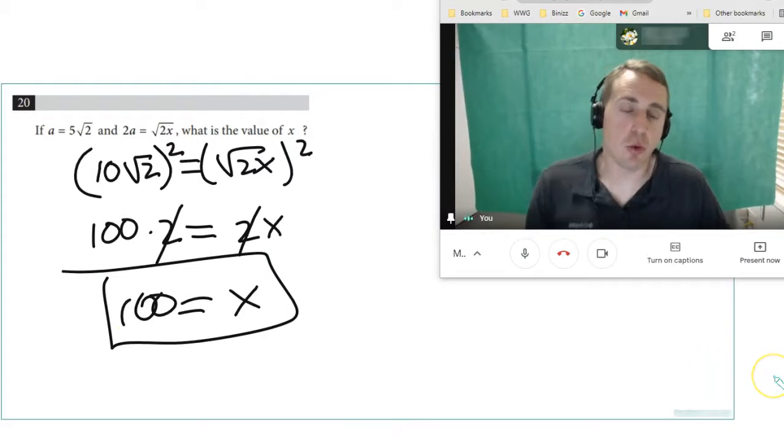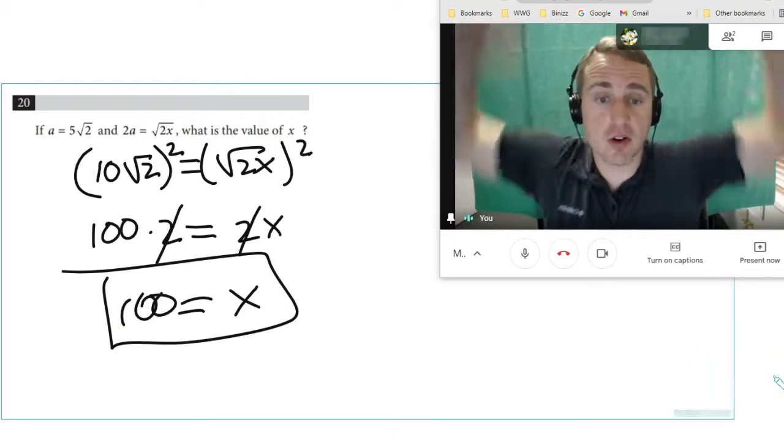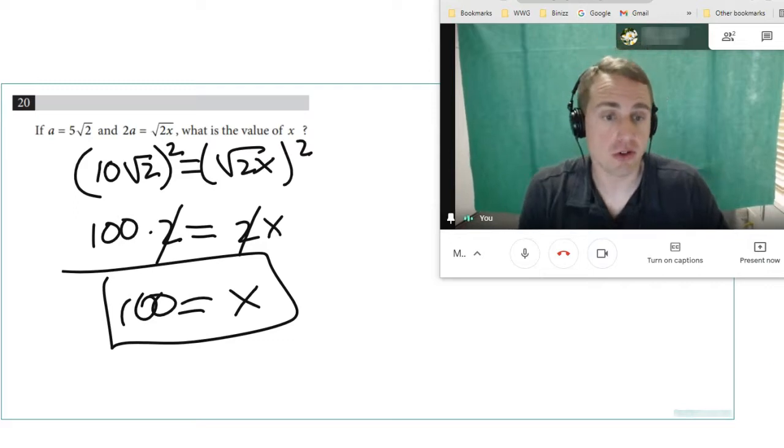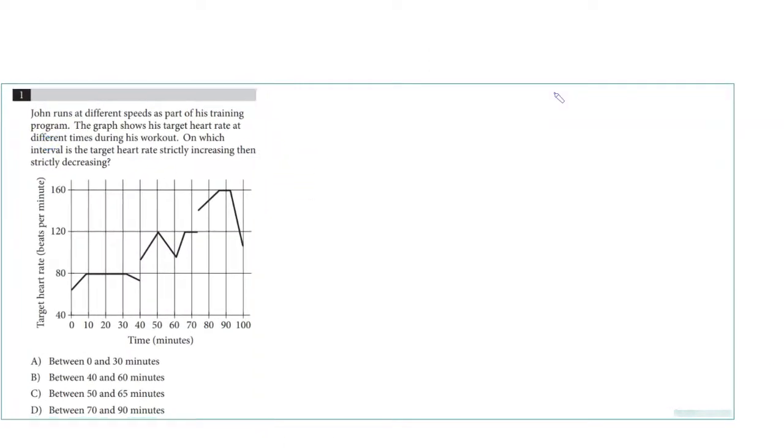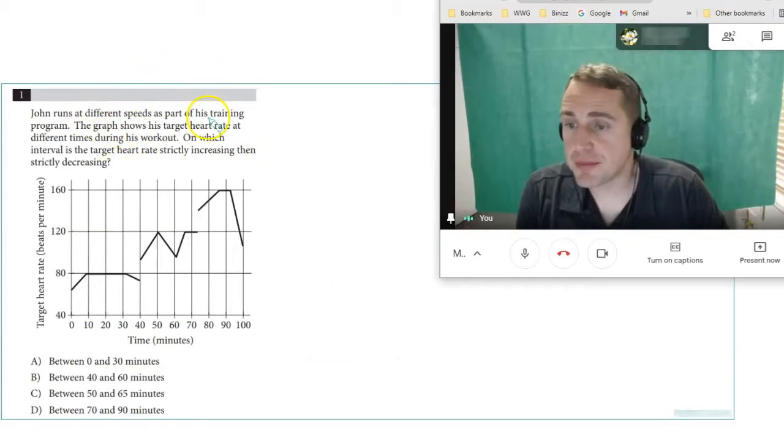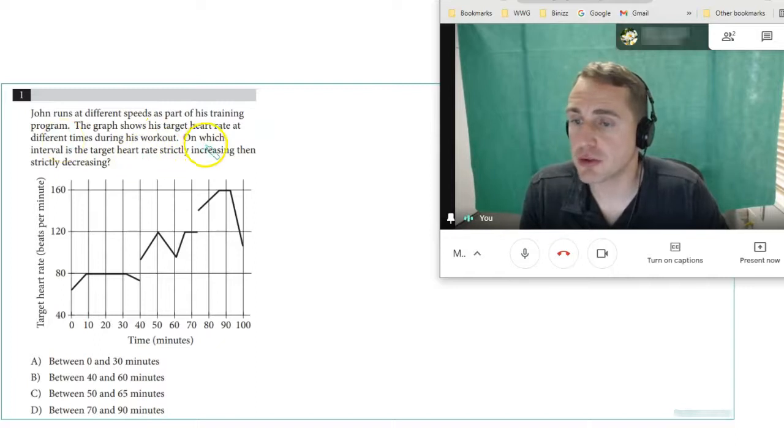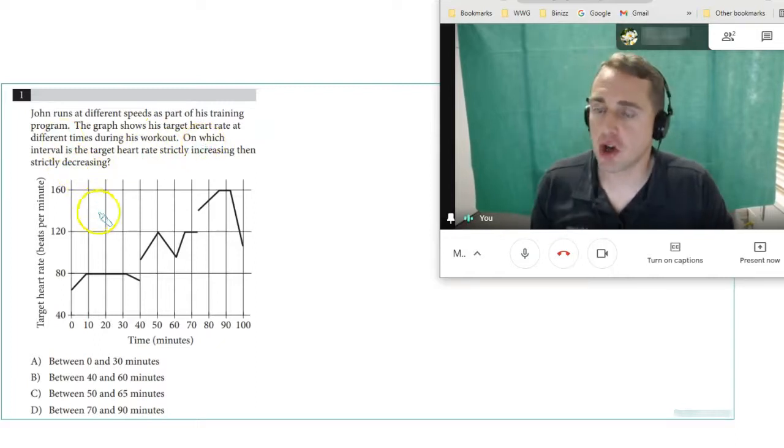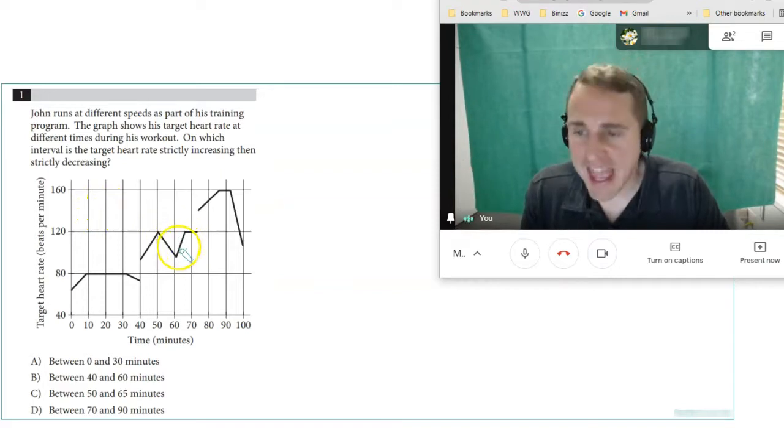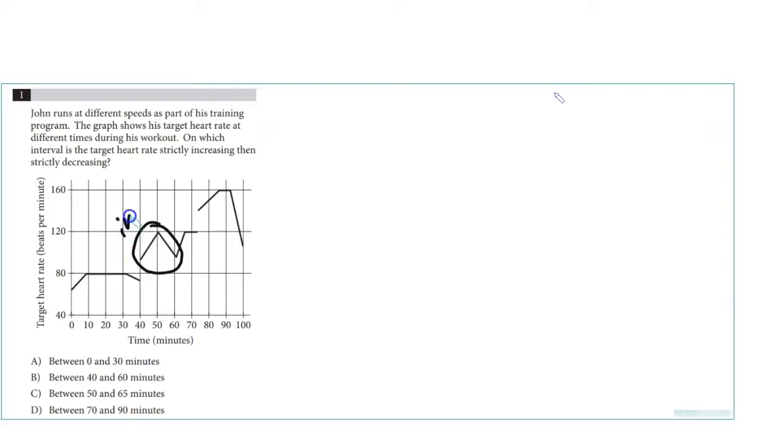That's how quickly you need to work to get this stuff done on the no calculator section. Here's our friend John. He's running different speeds as part of his training. The graph shows his target heart rate at different times during his workout. On which interval is the target heart rate strictly increasing then strictly decreasing? I'm thinking it's here, because this is an increase followed by a decrease. So I think that's 40 to 50, then 50 to 60. That's 40 to 60.